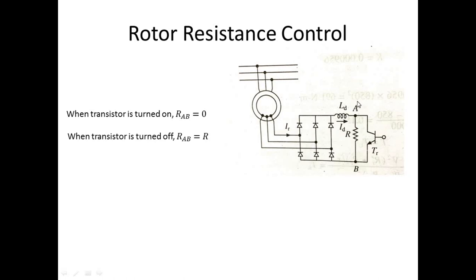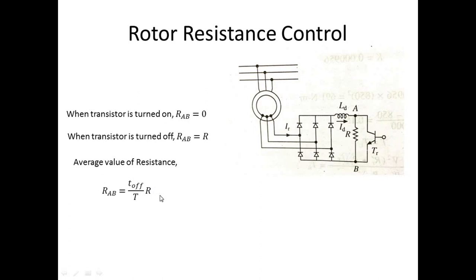We connect a fixed resistance R_AB and control it digitally using this switch. By continuously turning on and off, we get a pulsed resistance of 0 and R alternately. The average value is R_AB = (T_off / T) × R. Since T_off = T − T_on, this becomes R_AB = (1 − T_on/T) × R = (1 − D) × R. So by controlling duty ratio D, we can control the average resistance R_AB and thus the speed.